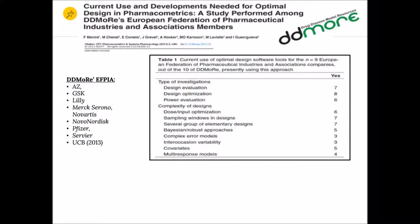In terms of complexity of design, optimized design approaches are mainly used to determine sampling windows or several groups of sampling times, and to optimize doses. DDMoRe stands for Drug Disease Model Resources, and is an Innovative Medicines Initiative project from the EU, which started five years ago involving 11 EFPIA companies, several academic groups, and SMEs in Europe. The objectives of the DDMoRe project are to deliver a model repository, an interoperability framework bridging modeling tools and methodology, and a workflow in pharmacometrics to automate and improve the modeling process. There is also a work package for training and one for new tool development.